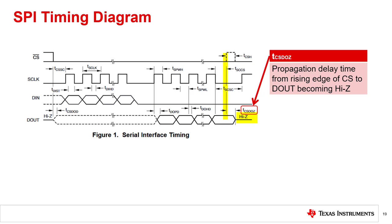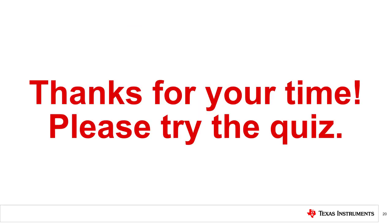TCSDOZ is the time from the rising edge of chip select to when DOUT returns to high impedance. Similar to TCSDOD, this is important when there are multiple peripheral devices on the SPI bus. That concludes this video. Thank you for watching. Please try the quiz to check your understanding of this video's content.